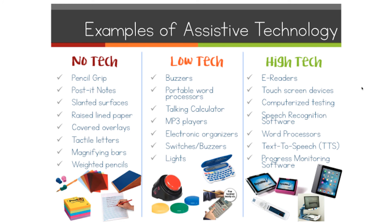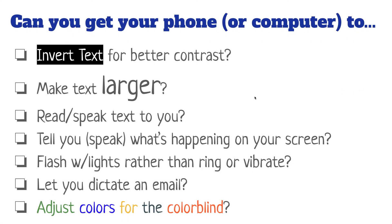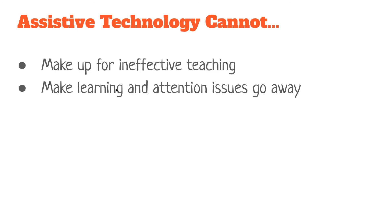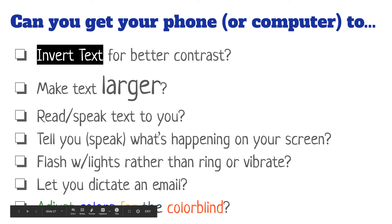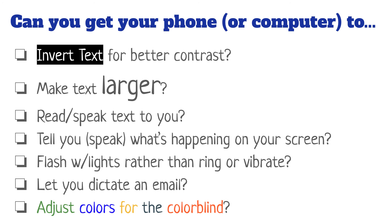All these slides are on Canvas. Here's something you could try right now: pull out your iPhone, Android, or smartphone, or get on your computer, and see if you can make your text larger, invert the text for better contrast, change the colors, or get your phone to read your email out loud to you. See if you can find some of these assistive technology adaptations already built into your device.